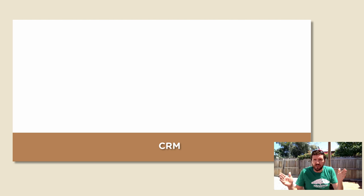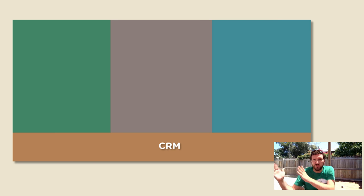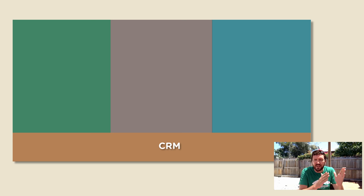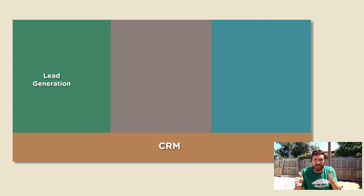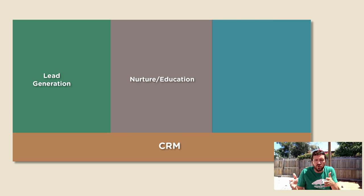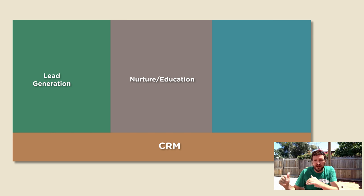Moving from left to right across the top of the rectangle, you have basically three thirds. The section on the left is lead generation. The section in the middle is nurture or education — driving toward conversion. And then the section on the right is your sales section.